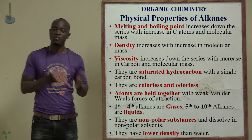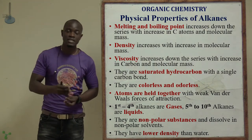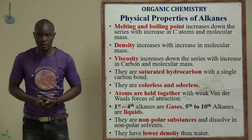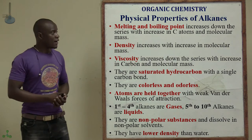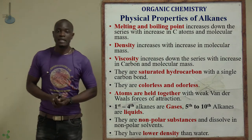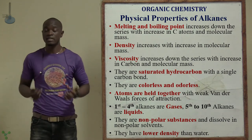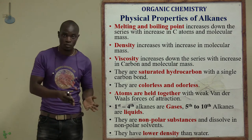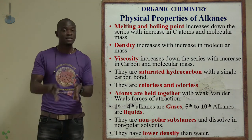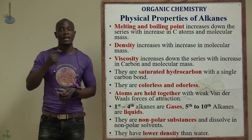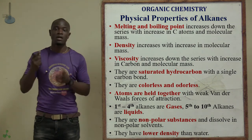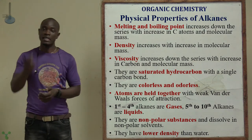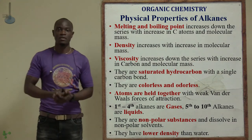The melting point and boiling point increase down the series with an increase in the number of carbon atoms. As the number of carbon atoms increases, the melting point also increases. The density also increases with increase in the number of carbon atoms — it increases down the group.